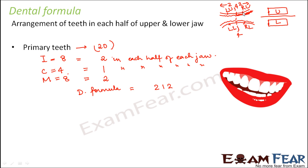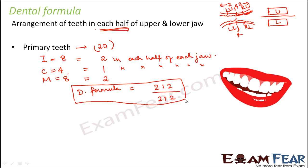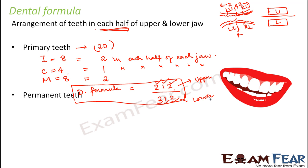So the dental formula for primary teeth is 2-1-2 over 2-1-2, meaning two incisors, one canine, and two molars in one half of the upper jaw, and the same in one half of the lower jaw. The numerator represents the upper jaw and the denominator represents the lower jaw.